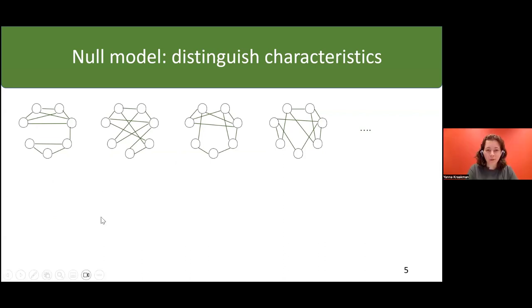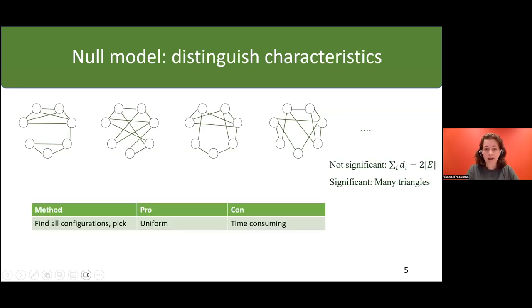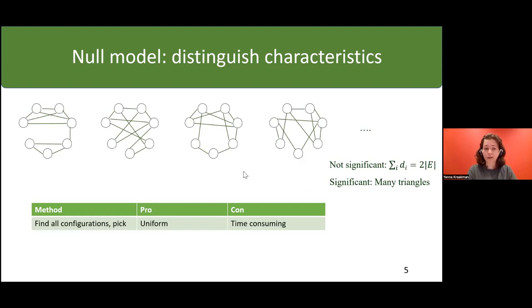We want to obtain a uniform sample from the set of graphs with the same degree sequence. The first way to do that is simply to draw all possible configurations and then pick the ones we want. The good thing about this method is that it will for sure give us a uniform sample, but the downside is that it's very time-consuming for larger graphs and not feasible at all.